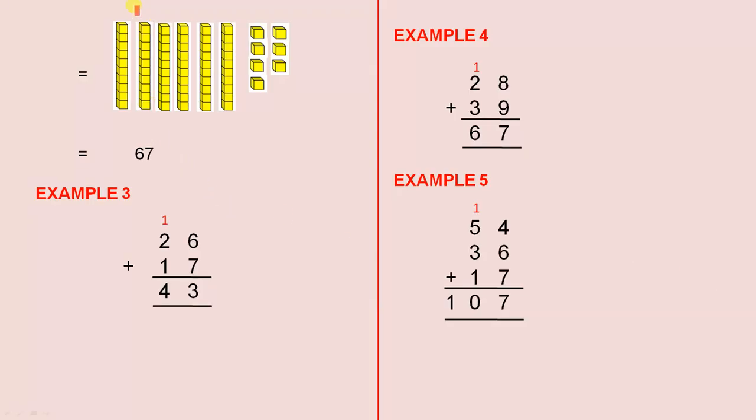Here are 6 tens, 1, 2, 3, 4, 5, 6 and 7 left over and that's 67. Now let's have a look at what happens with the algorithm.